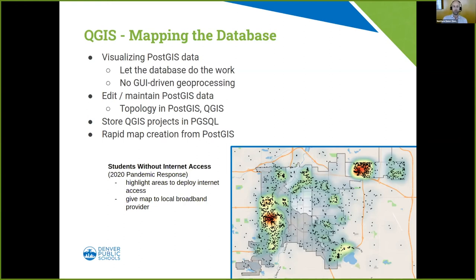The last couple of years have been incredible with the pandemic, and having all these tools at our disposal has been a game changer — able to rapidly pivot work to something completely different but using the same data already in our database: our boundaries, regions, students, schools. Loading data from the state health department, loading data from someone's Excel list, reading a Google Sheet, cranking it all into PostGIS, doing an analysis, getting a picture out through QGIS — especially the first year of the pandemic when questions came in and we didn't even know where the answer was going.